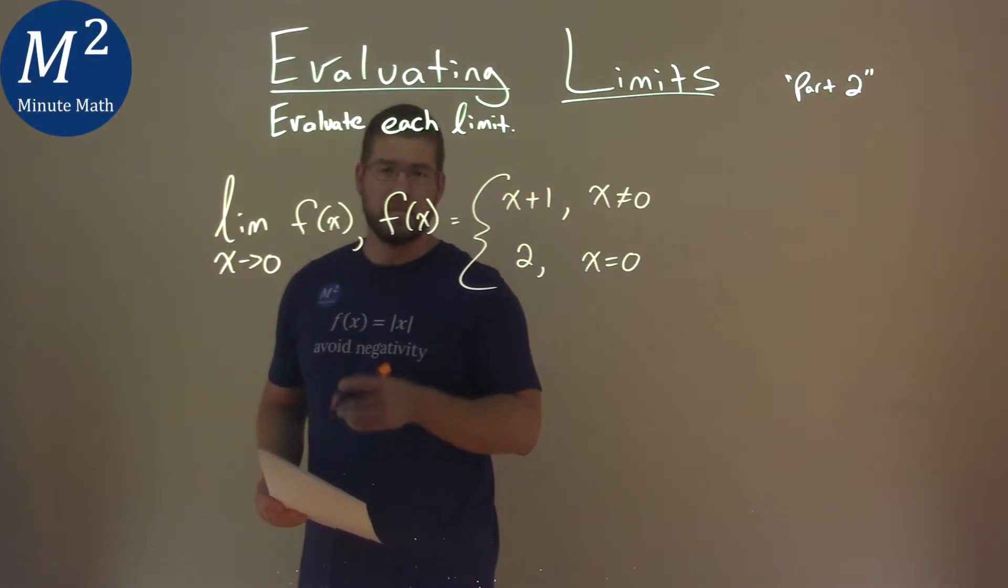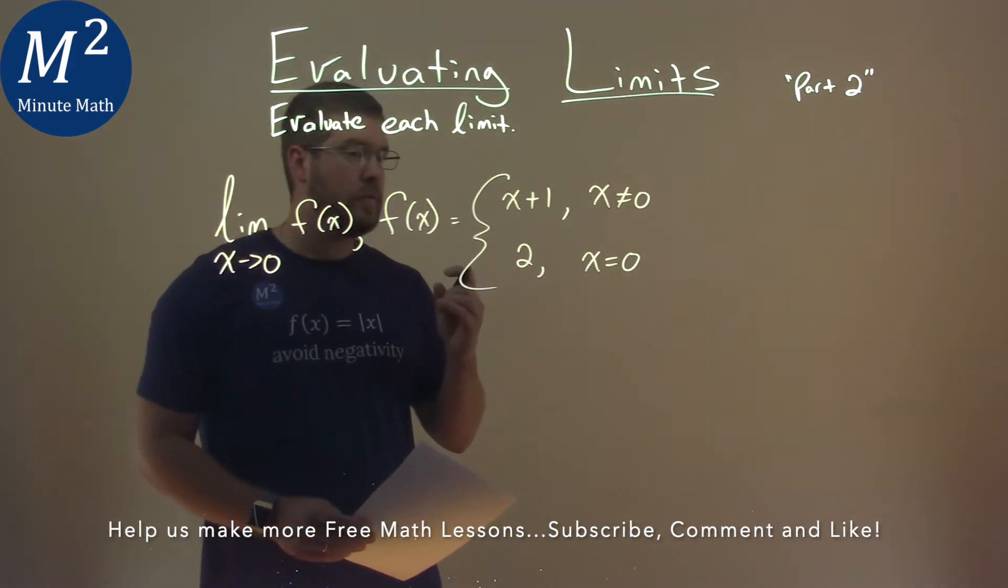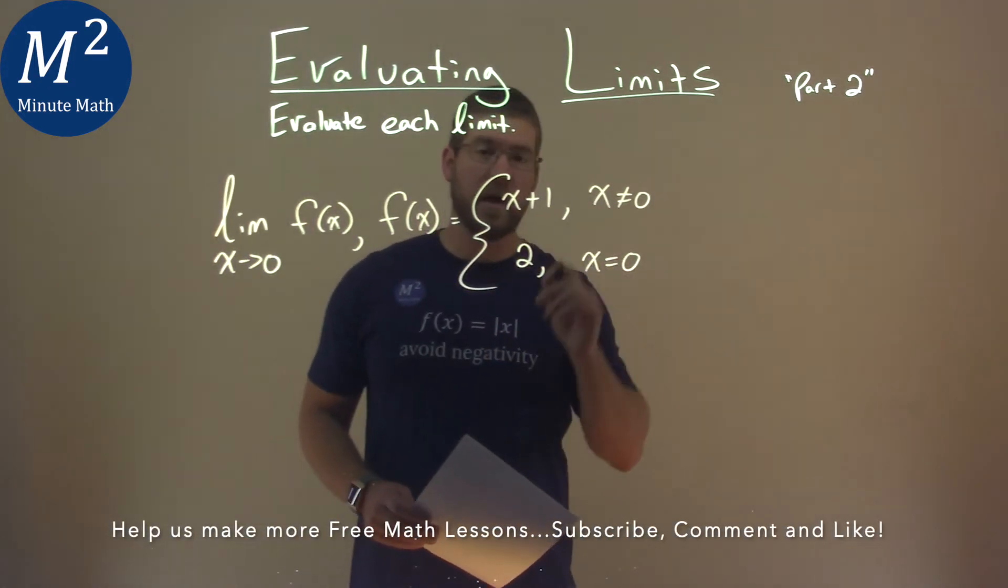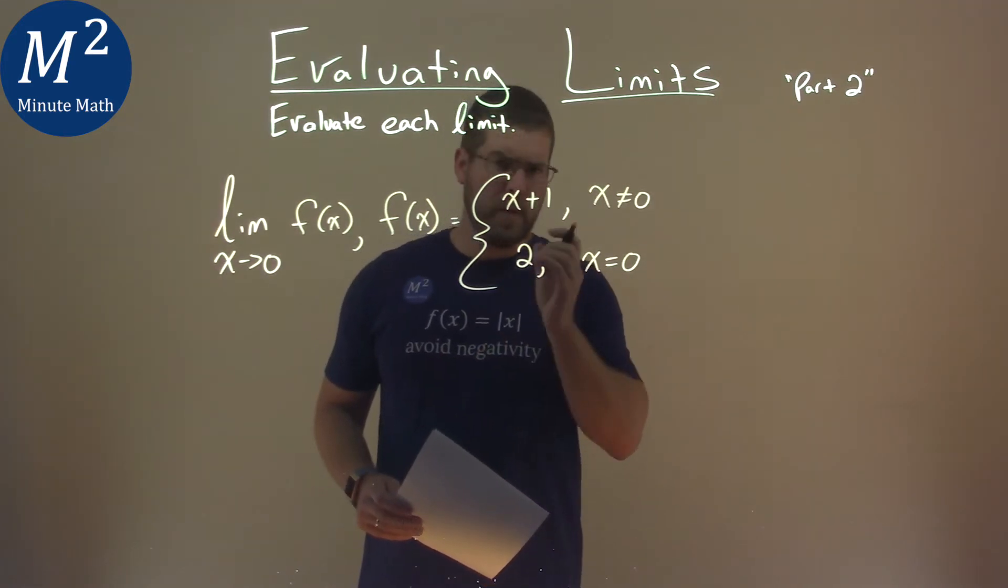We're given this limit right here. The limit as x approaches 0 of f of x, where f of x is equal to the piecewise function x plus 1, where x is not equal to 0, and 2 when x is equal to 0. We have to find the limit.